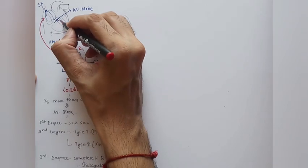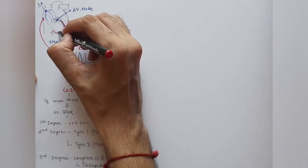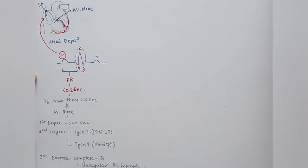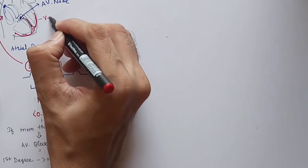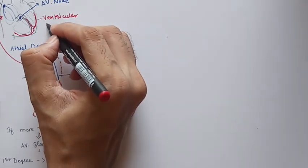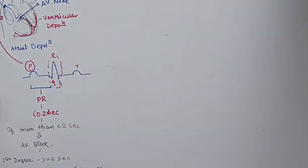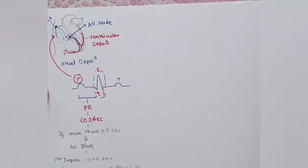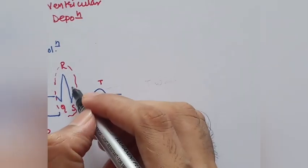The QRS complex represents ventricular depolarization — all the muscle fibers of the ventricle go into depolarization. We do not have a separate wave for atrial repolarization because the QRS complex hides the atrial repolarization wave.